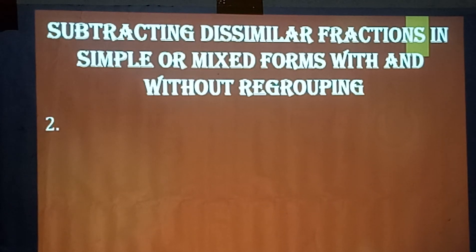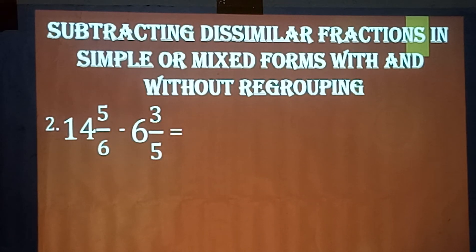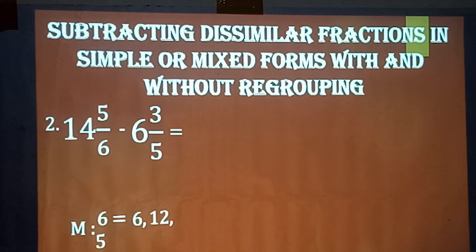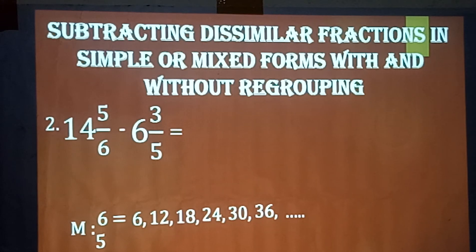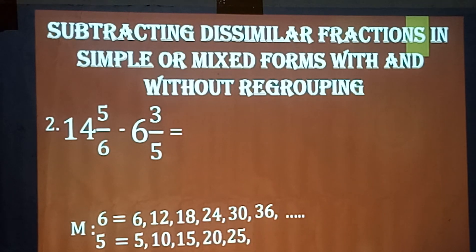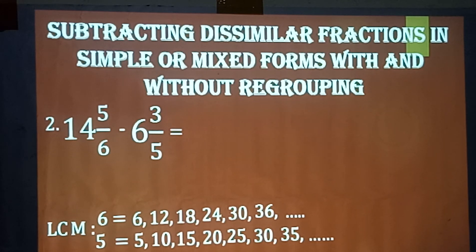Example number two: 14 and 5/6 minus 6 and 3/5. The multiples of 6 are 6, 12, 18, 24, 30, 36, and so on. For 5 we have 5, 10, 15, 20, 25, 30, 35, and so on. The least common multiple of 6 and 5 is 30, so the LCD equals 30.